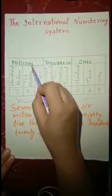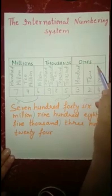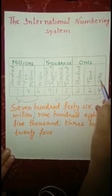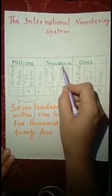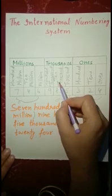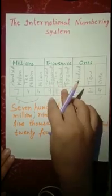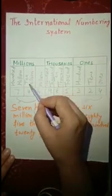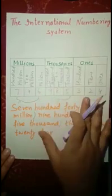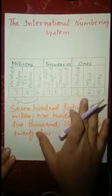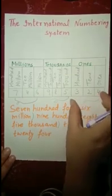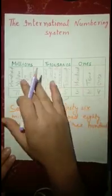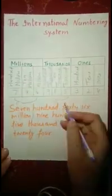Each period is divided into three places. The ones period has ones, tens, and hundreds. The thousands period has thousand, ten-thousand, and hundred-thousand — three places. The millions period also has three places: million, ten-million, and hundred-million. In the international numbering system, we divide the number into groups of three, with three groups total.